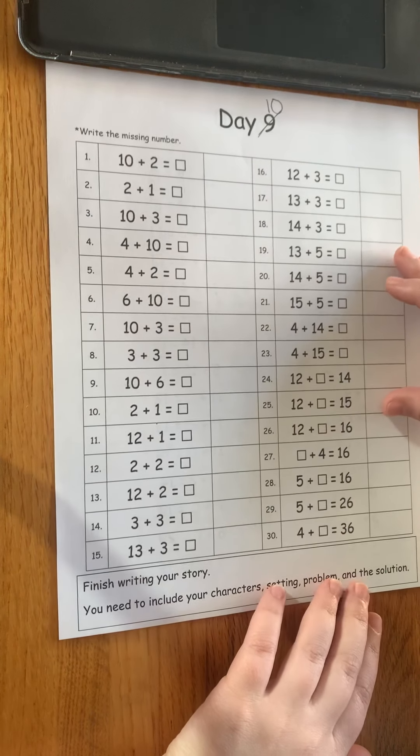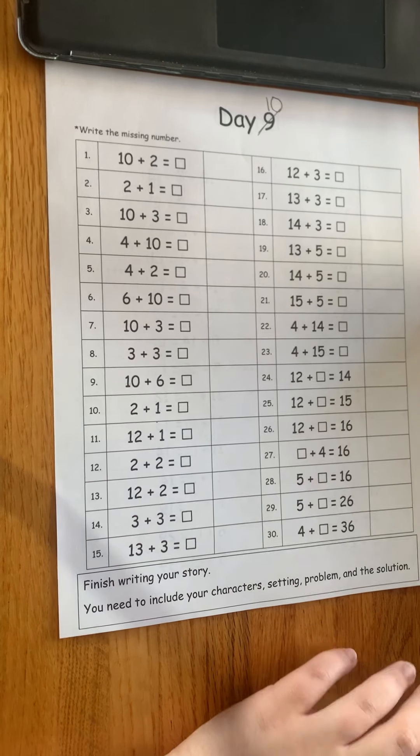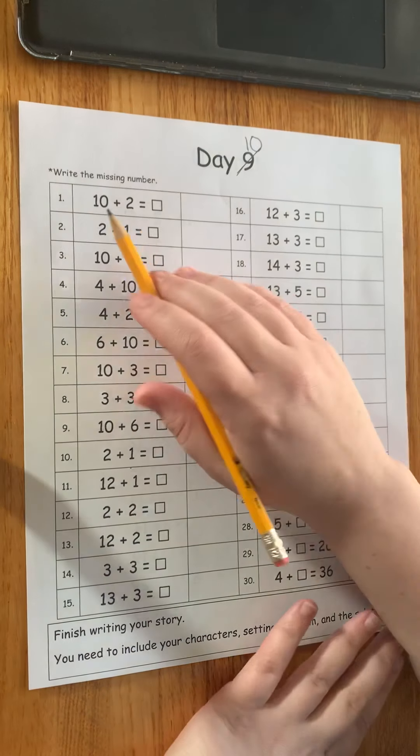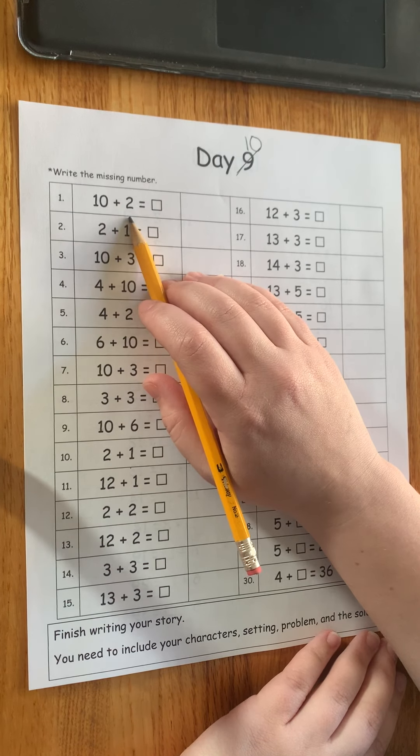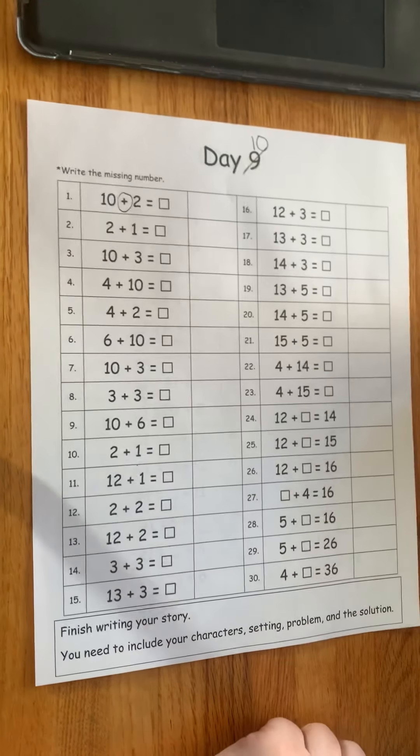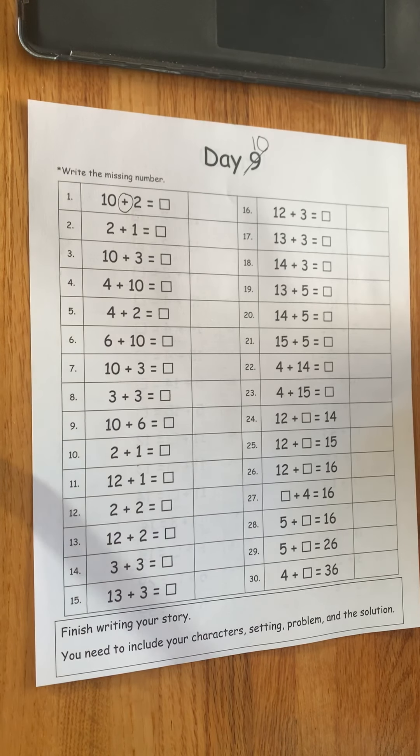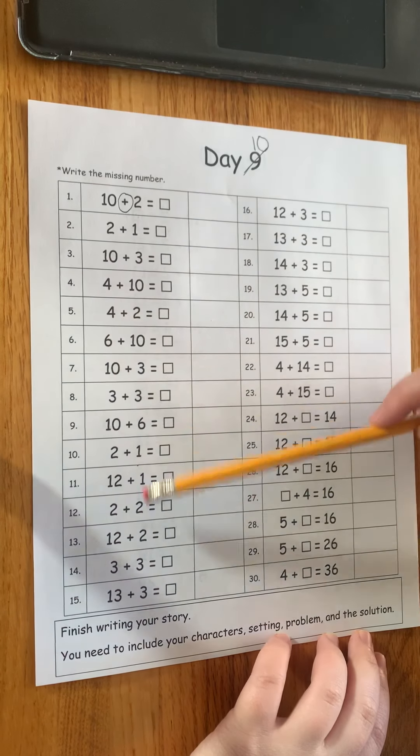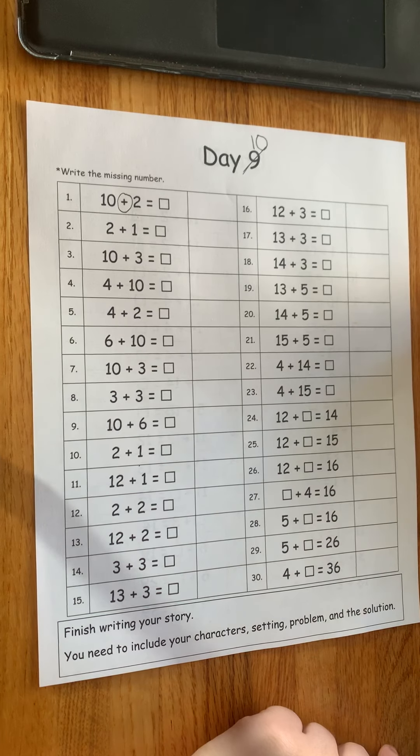So for math we have one of our number sprints here. So I'll do a few with you. The first one is 10 plus 2. Don't forget to make sure you're really looking at our symbols here to make sure you're doing the right operation. This is addition. This whole page happens to be addition but sometimes it's mixed so you have to really look at it.